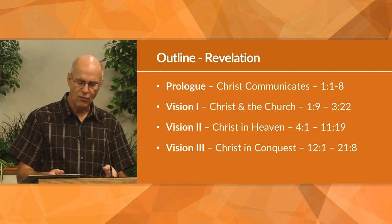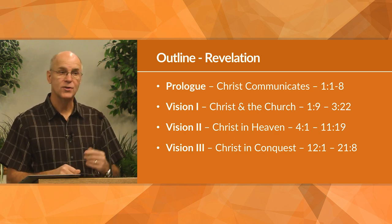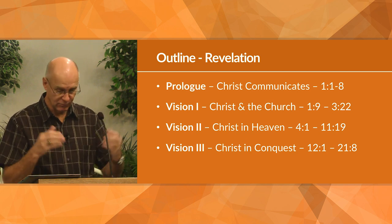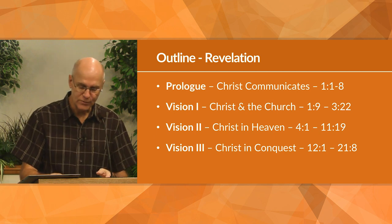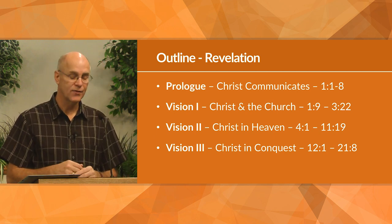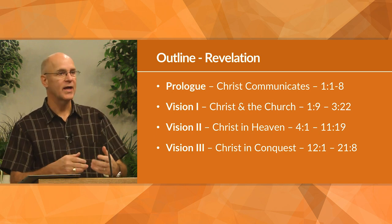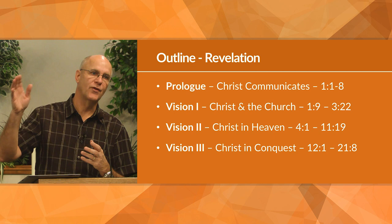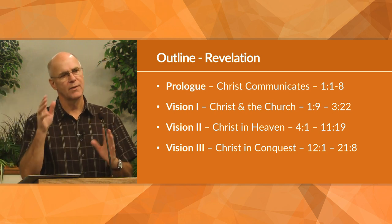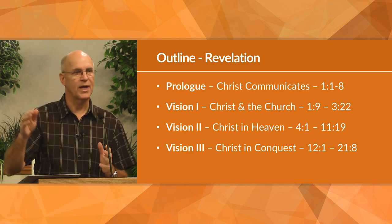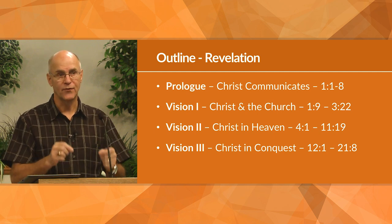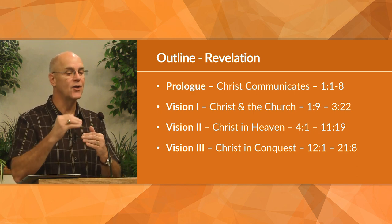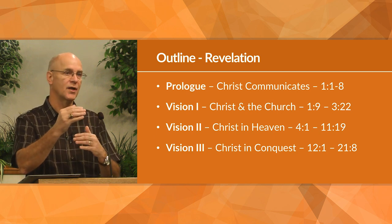We need to remember that when John is writing this particular book, the persecution by Rome has already begun. It's not something happening in the future — it's something they're actually experiencing in the now. So what he is writing informs the church of the first century concerning their immediate and future struggle. In this way it is prophecy. Sometimes people talk about Revelation as if it's all about the future and the end of the world. But as far as John is concerned, these things were happening now, and the prophecy simply referred to something that would happen in the not too distant future — the ultimate destruction of the Roman Empire.